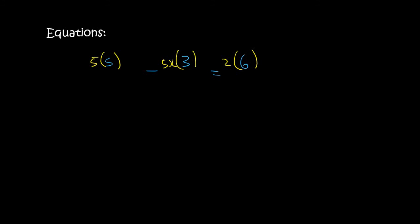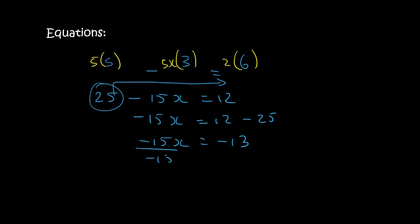And so now we just have 5 times 5, which is 25. 5x times 3 is 15x. 2 times 6 is 12. And then you just solve. So I'm just going to leave the x on the left. Take this over to the other side. So it will become 12 minus 25. And so you end up with negative 15x equals negative 13. You then divide by minus 15 on both sides. So that this cancels, so that you get x alone. It's all about getting x alone. And so the negative and the negative cancel. And so you end up with 13 over 15.